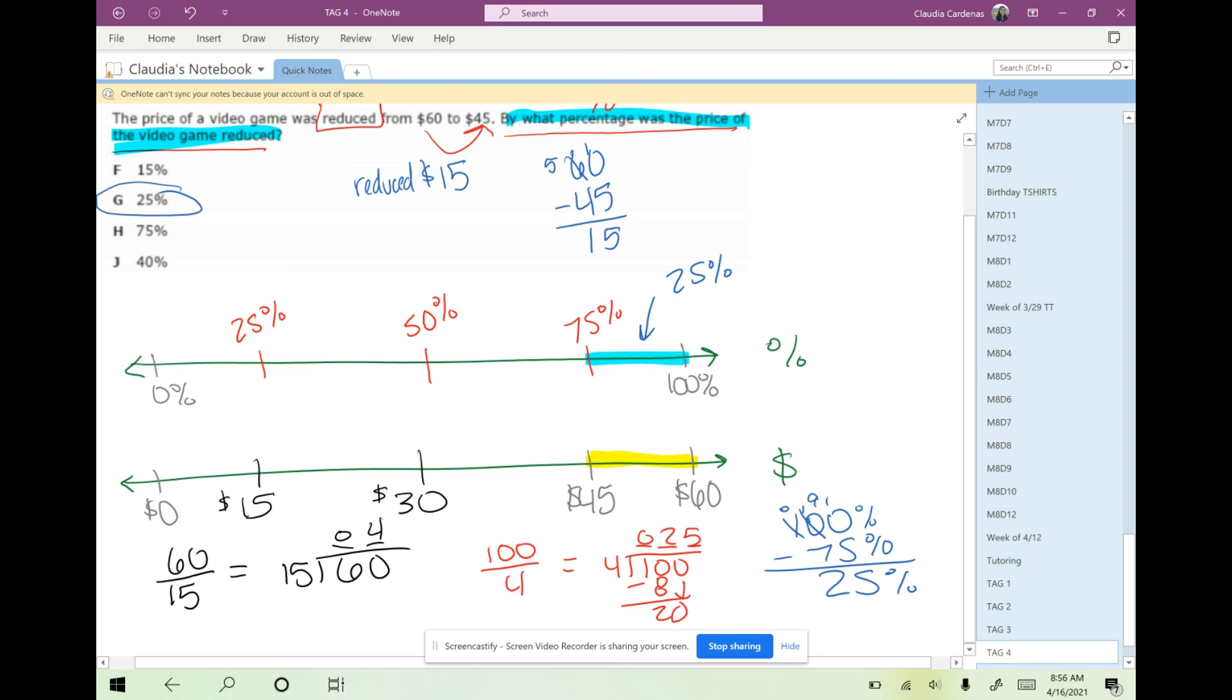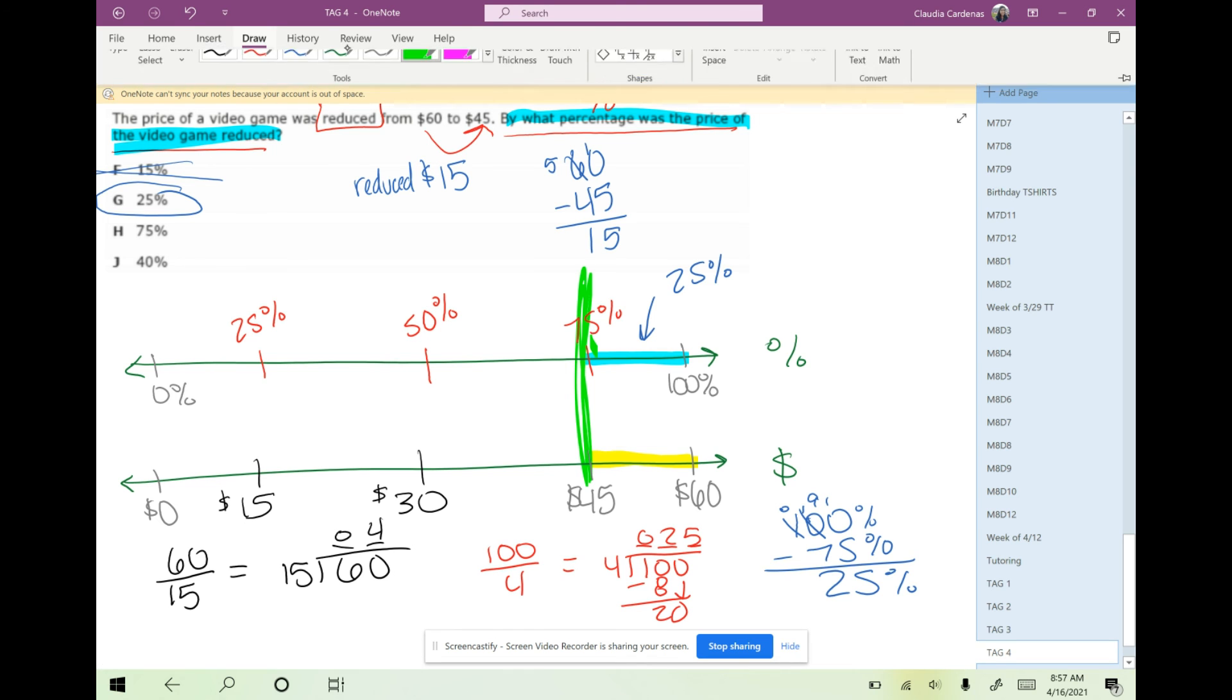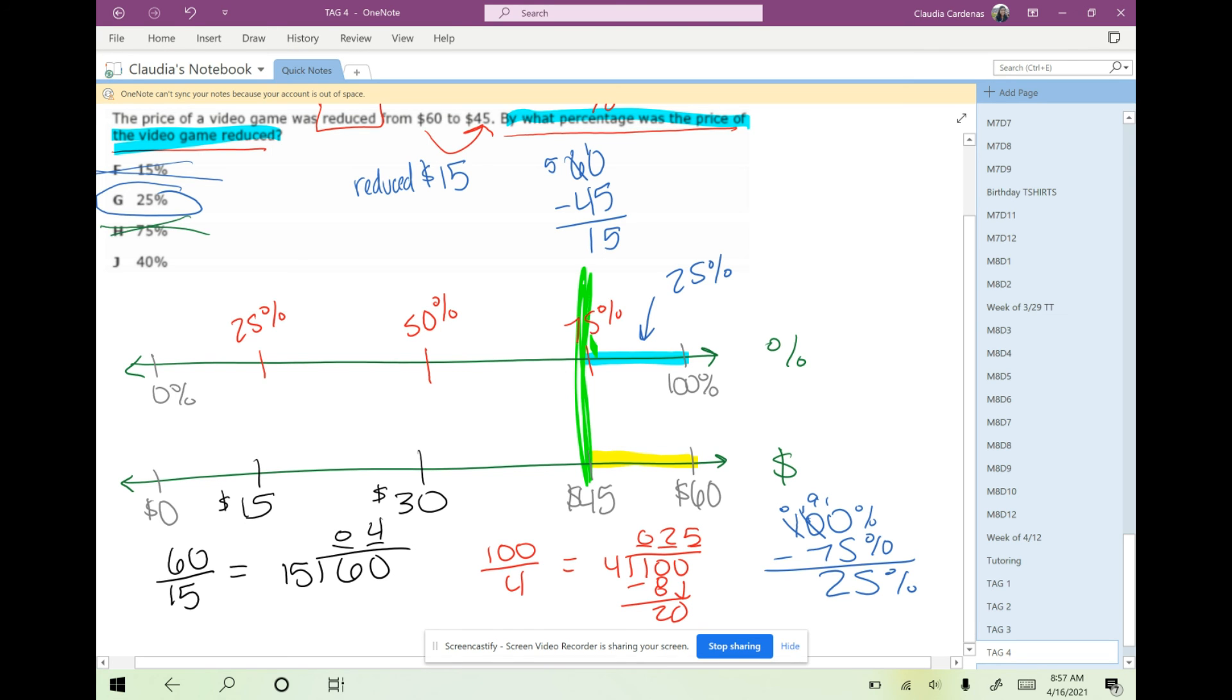But what if we were looking at letter choice F? Well, it says that $15 is the amount of change. So students may think that this is the percent change and choose that answer incorrectly. If a student chose letter H, then they see that 75% matches with the $45. It matches here evenly. But that's not what the question wants. It doesn't want to know the percentage that 45 is out of $60. So that is another incorrect mistake that we may choose if we're not being very careful. And then 40% is just a random distractor answer.